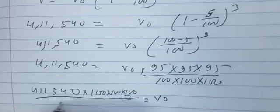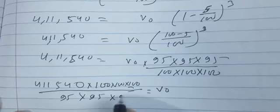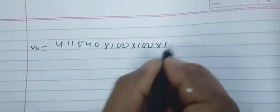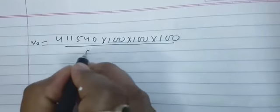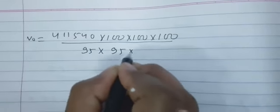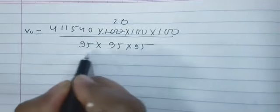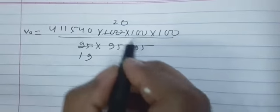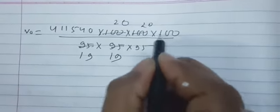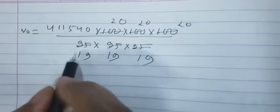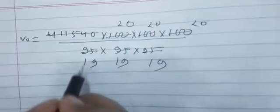Now we will transfer all these numbers to LHS. Here is V₀ equals 4,11,540 into 100 into 100 into 100 whole divided by 95 into 95 into 95. We will do this calculation part here. We may write here also V₀ equals 4,11,540 into 100 into 100 into 100 divided by 95 into 95 into 95.